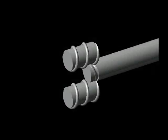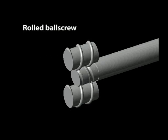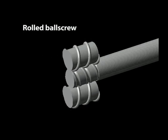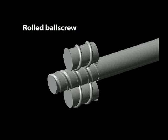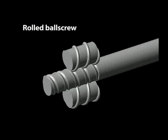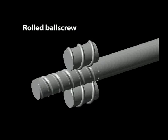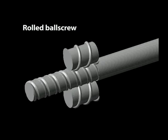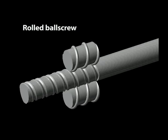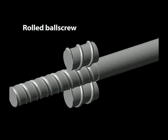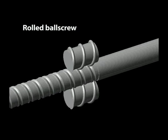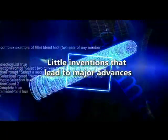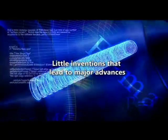In contrast with ground ball screws, roller ball screws are produced by using rollers to create the threads in the screw surface. They are then subjected to heat treatment, polished, and assembled. These ball screws are easy to produce, reasonably priced, and can be shipped quickly. Little inventions that lead to major advances — ball screws.